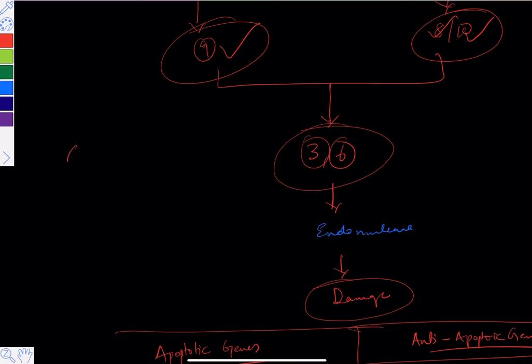Caspases are a series of proteolytic or protein-splitting enzymes. They include caspases 3, 6, 7, 8, 9, and 10. Caspase 9 is mainly intrinsic; 8 and 10 are extrinsic; both further activate 3 and 6. The word 'caspase' breaks down as: C for cysteine proteinase, ASP for aspartic acid, and ASE for enzymes.